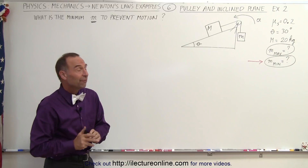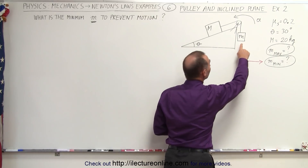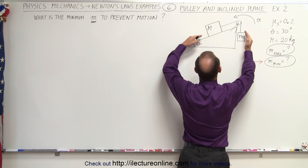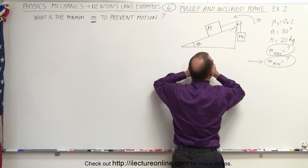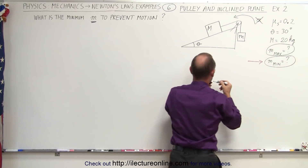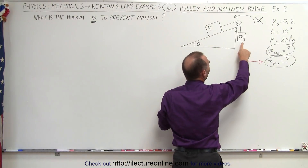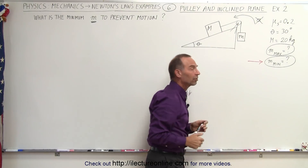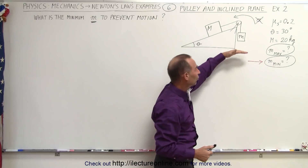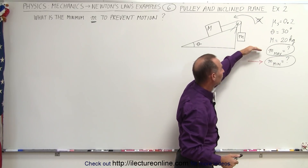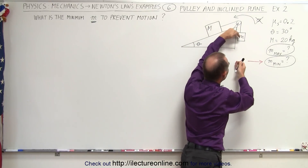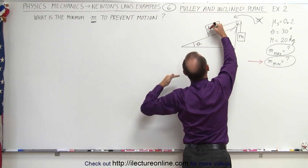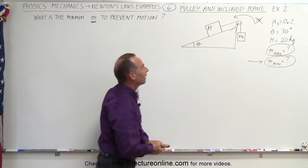What we mean by the minimum value is: what is the smallest value m can be such that if it's any smaller than that, the whole system will begin to accelerate in this direction. We're trying to prevent it from accelerating, but finding how small m can be so it will not yet start accelerating in that direction. In the previous video, we looked for the maximum value to prevent sliding in one direction; now we're looking for the minimum value so it will not slide and accelerate in that direction.